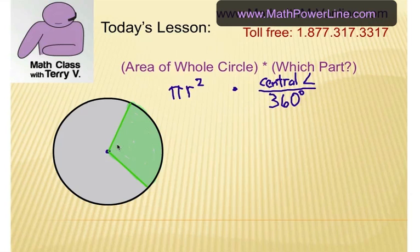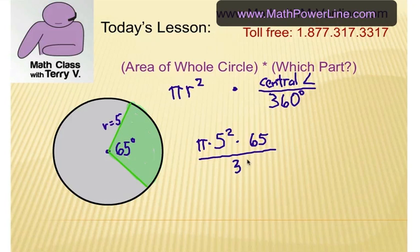And let's say that this is a 65 degree angle here. And we also need another radius, and we'll say the radius is 5. Alright, so how do you do that? Well, you're going to have pi r squared. So you're going to have pi times 5 squared. Multiply by the central angle of 65. And you're going to divide that whole thing by 360 degrees.